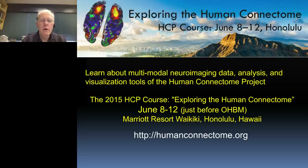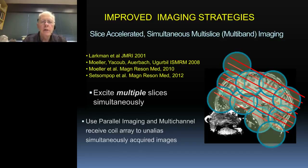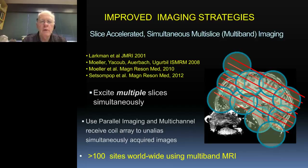One critical aspect of why this data is better is the improved imaging strategy known as multi-slice or multi-band imaging. It basically involves exciting not just one slice at a time through the brain, as has been conventionally done, but exciting up to eight slices at a time, and then using the elements in the head coils to extract the signals and identify the source from each slice.